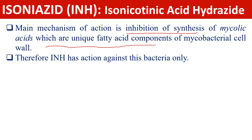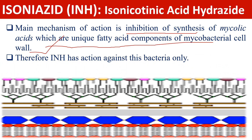The main mechanism of action is inhibition of synthesis of mycolic acid, which are unique fatty acid components of the mycobacterial cell wall. This is how the cell wall of mycobacterium looks. The cell wall of mycobacterium is mainly made up of mycolic acid, found only in mycobacterium. Therefore, INH has action against this bacteria only, but not against other bacteria.